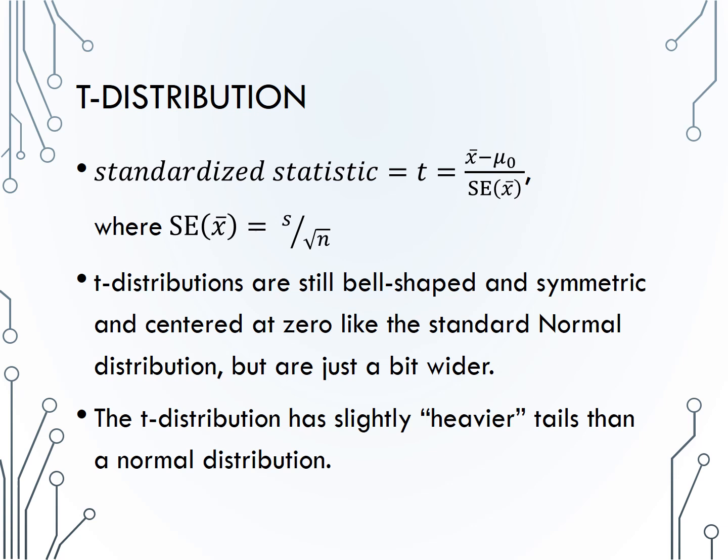We just use the term standard deviation a lot, so let's be sure we understand each part. As a reminder, s is the variability of individuals, like the variability in each person's hours of sleep. SE of x-bar is the estimated variability of the sample means, like the variability in the mean hours of sleep from different classes.